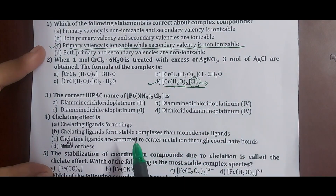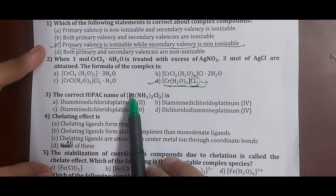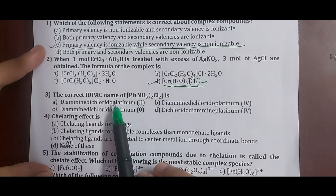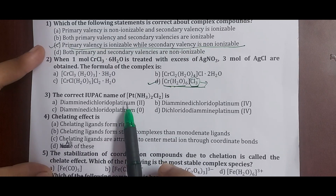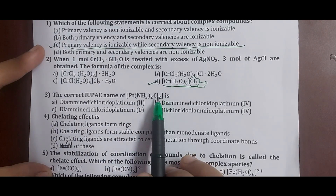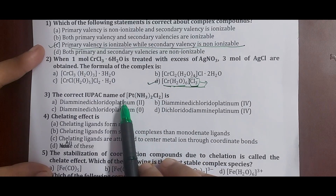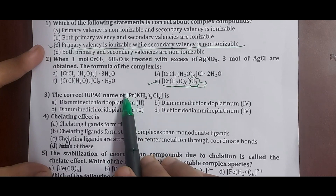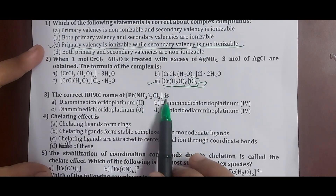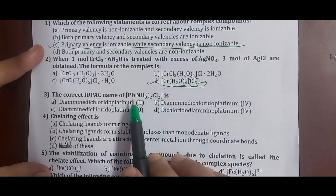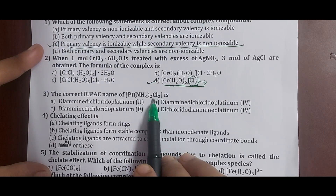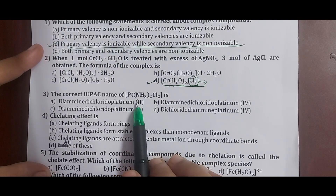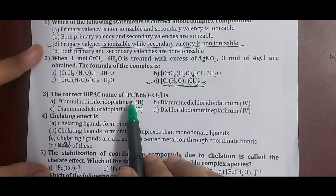Question 3: the correct IUPAC name of [Pt(NH3)2Cl2]. When writing the IUPAC name, we write ligands in alphabetical order followed by the metal name. If the complex is neutral, the metal name remains as is. Here there is no counter ion, so it is a neutral complex. The metal is platinum; ligands are ammine (NH3) and chlorido (Cl). We calculate the oxidation state: x + 0 + 0 + 2(−1) = 0, so x = +2.